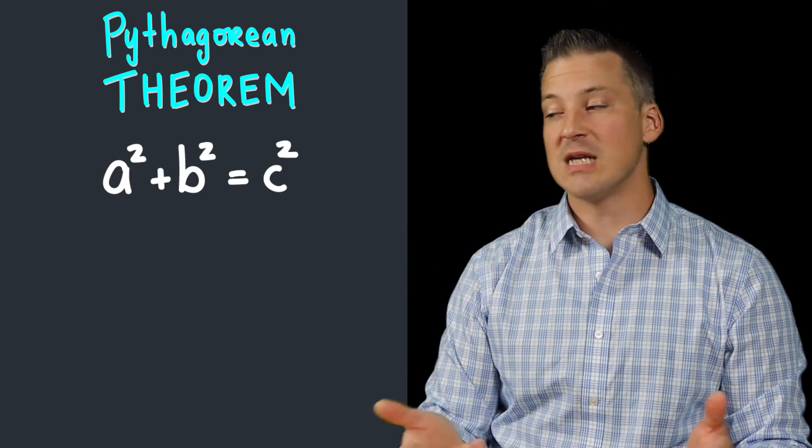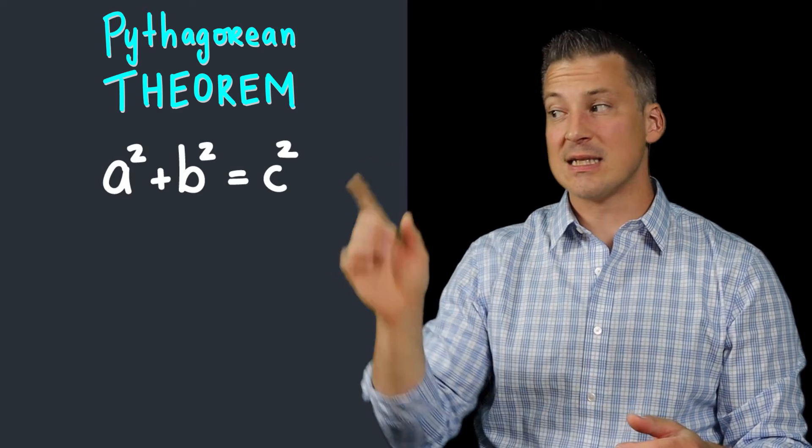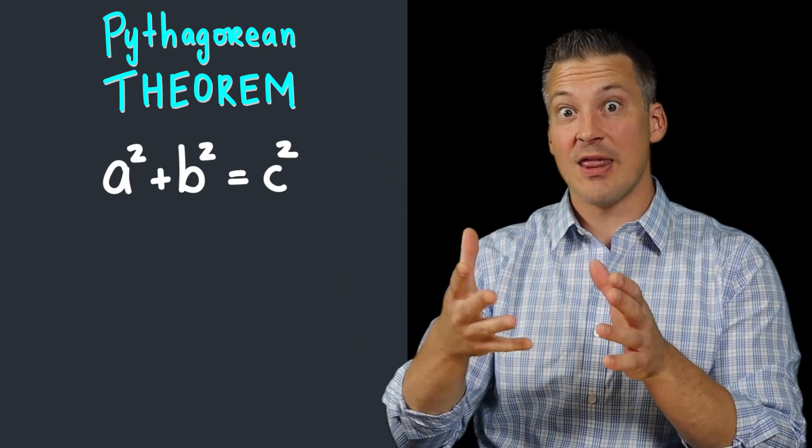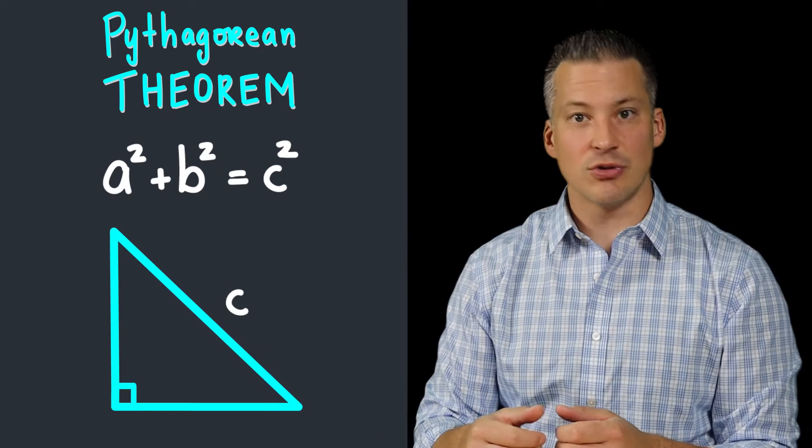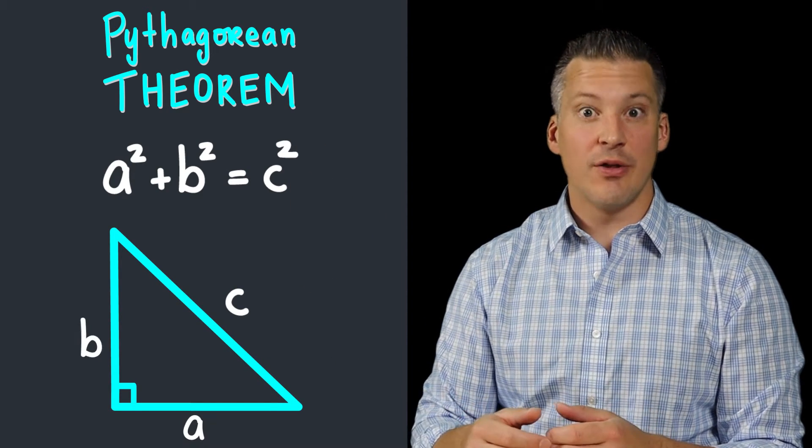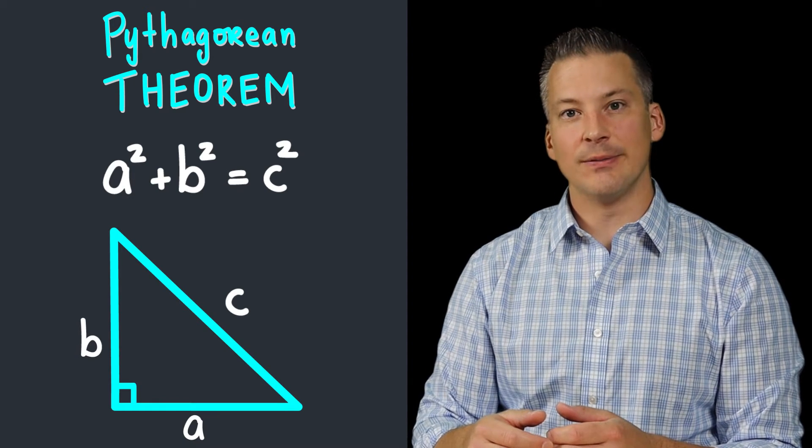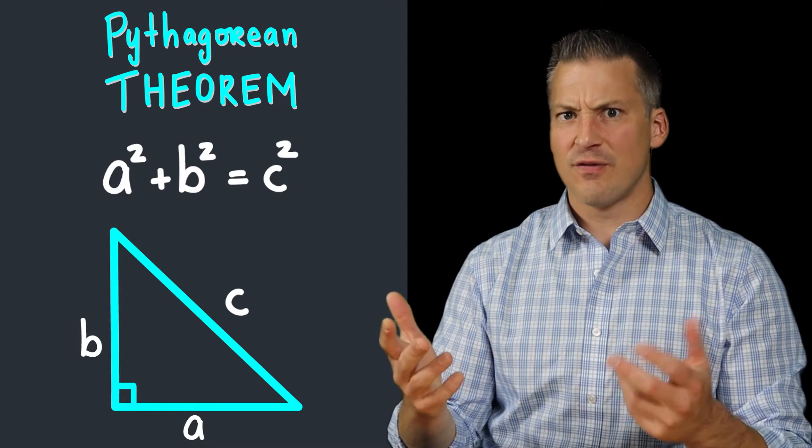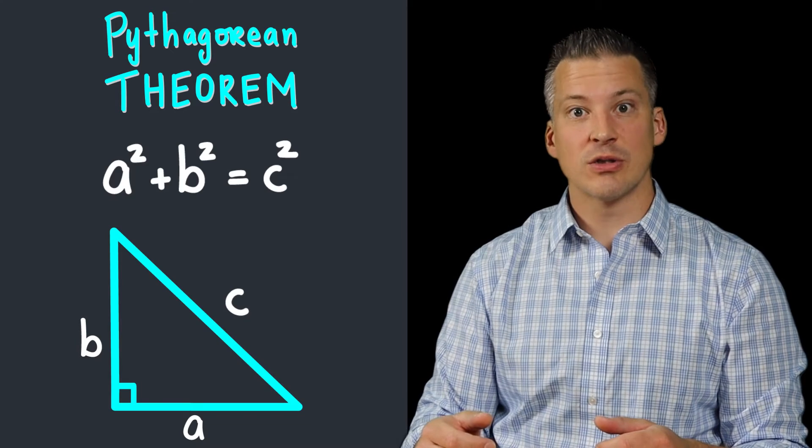Now, what's a, b, and c? Well, it turns out that c is the special side that represents the length of the hypotenuse, always. a and b then will just reference one of the two other sides of that right triangle. So it's a fairly straightforward formula. Let's see how it works.